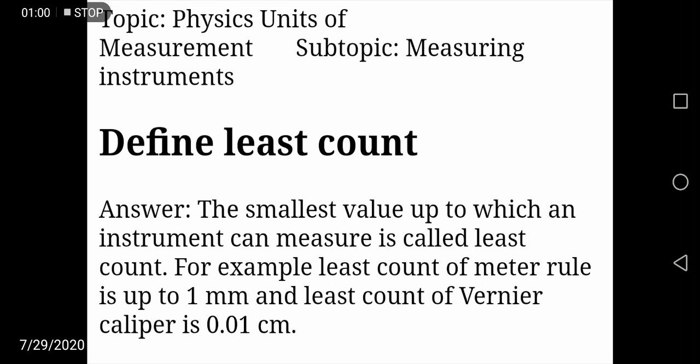In other words, you can say that a vernier caliper can divide 1 millimeter into 10 equal parts. It means it can measure the one-tenth fraction of one millimeter.